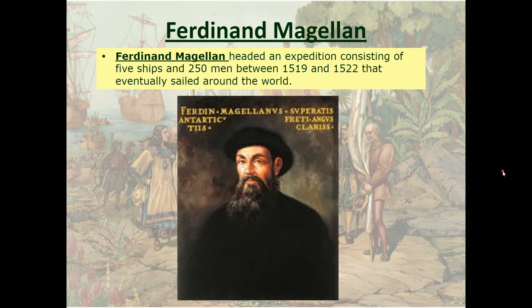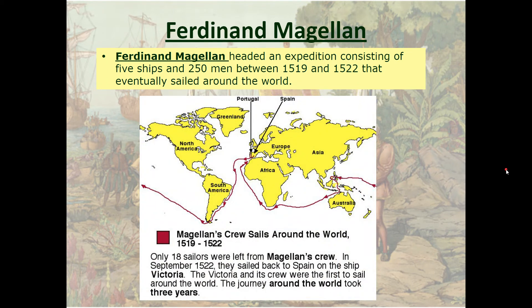Using information gained from the voyages of Vasco da Gama, Amerigo Vespucci, and Christopher Columbus, Ferdinand Magellan headed an expedition of five ships and 250 men sailing for Portugal between 1519 and 1522. This expedition would eventually circumnavigate the globe. Magellan himself would not finish the journey — only 18 sailors survived from his original crew of 250. In September 1522, they sailed back to Spain on the ship Victoria, the first crew to sail around the world. Their journey took about three years.